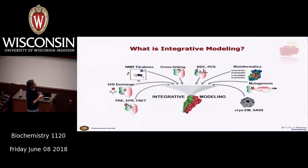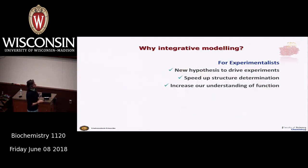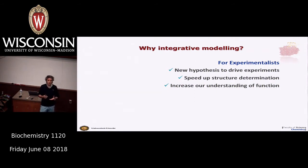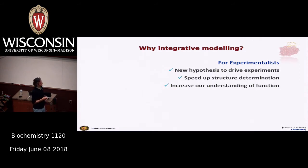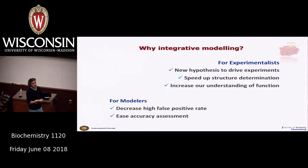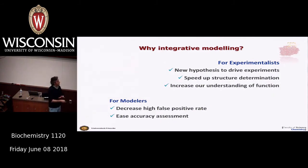These days we speak a lot about integrative modeling — combining large numbers of different information sources to bias sampling and generate models of complexes. If you are an experimentalist using modeling, the model should not be the end of the path — it's the starting point for new experiments, generating hypotheses you can go back and test in the lab. It may help speed up structure determination and increase understanding of function. From the modeling side, using data helps decrease false positive rates, limiting irrelevant models.